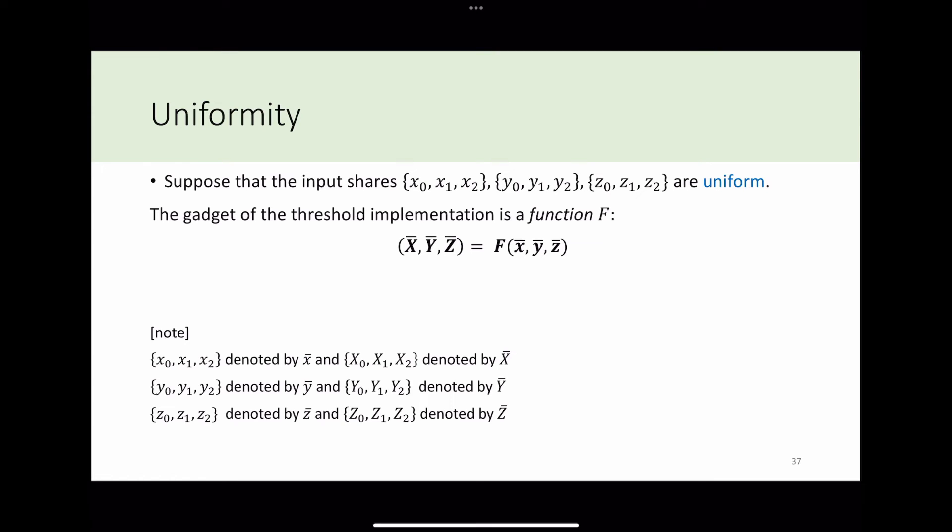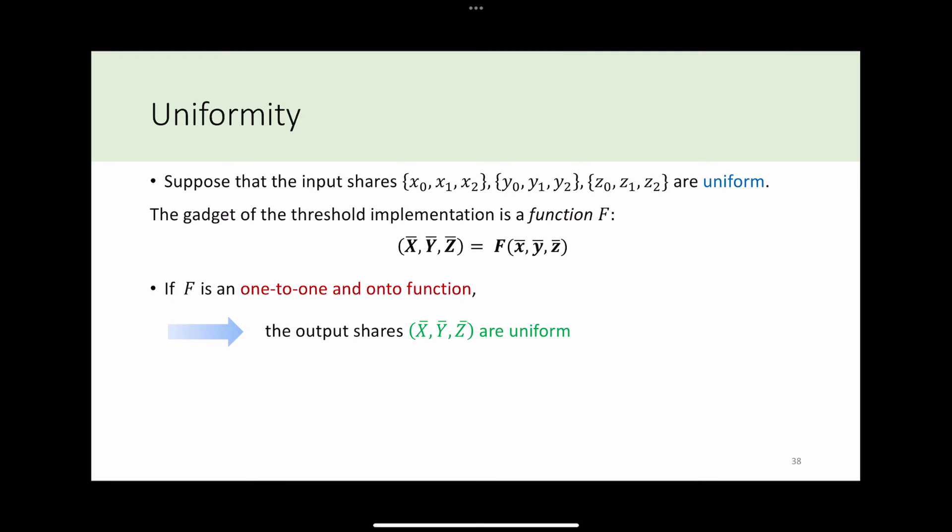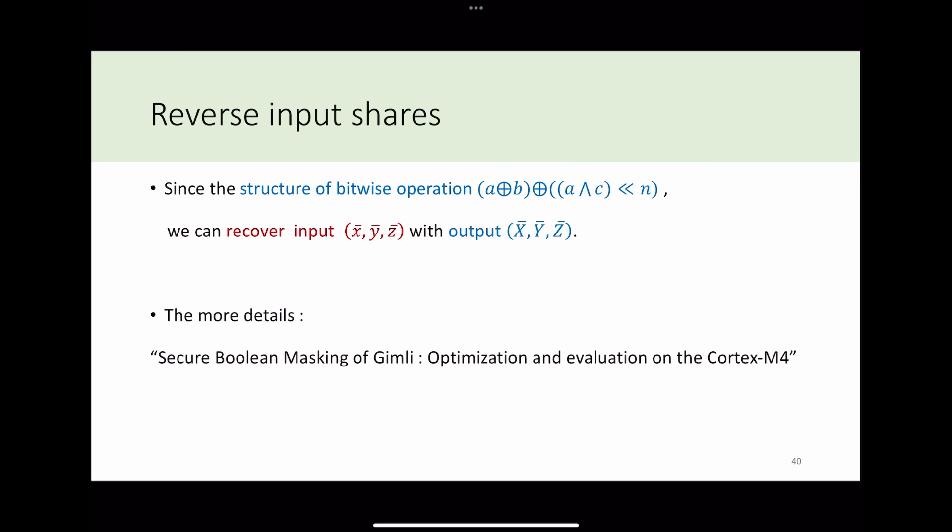It is hard to check the uniformity directly. Therefore, we can convert the uniformity problem to another problem. Suppose that the input shares are uniform, and the gadget of threshold implementation is the function f. If function f is a one-to-one and onto function, we can claim that the output shares are uniform. Therefore, the problem becomes finding the inverse function of f. Since the structure of bitwise operation, we can recover the input share with the output share. More detail can be found in our paper.